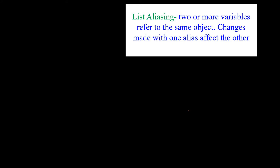First, list aliasing. As per the definition, it says two or more variables refer to the same object — that is list aliasing. This is why changes made with one alias affect the other.